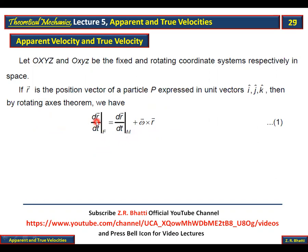Here R can be replaced by any vector A. So in the rotating axis theorem, wherever R appears, it can be replaced by a general vector A. The derivative of A with respect to time can be expressed in either the fixed or the rotating coordinate system.